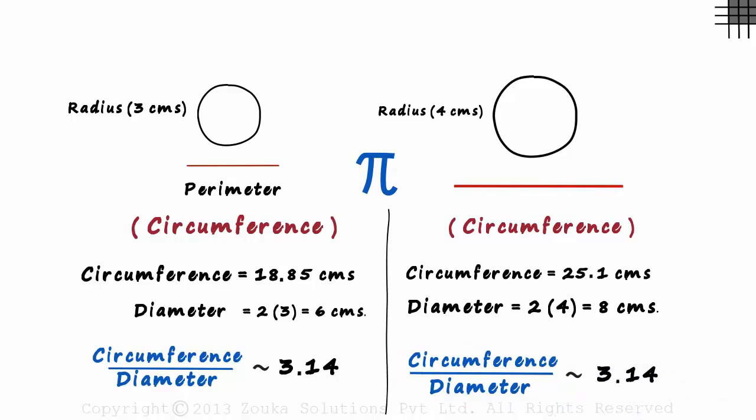No matter what circle you look at, the value of circumference by diameter will always be approximately equal to 3.14. This value is pi. Remember, both these values are approximations.